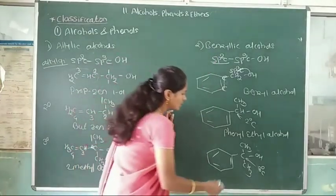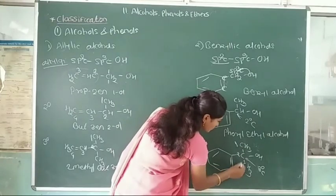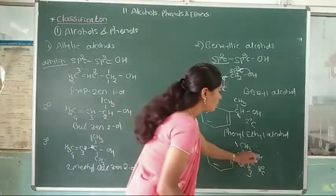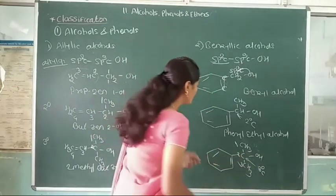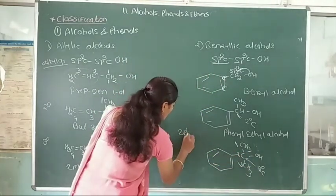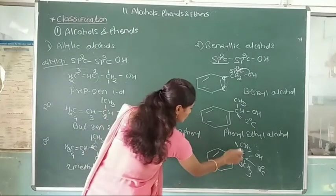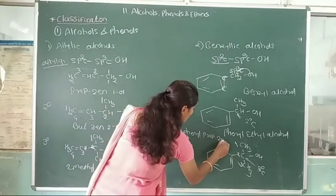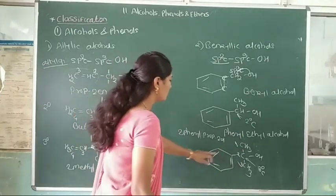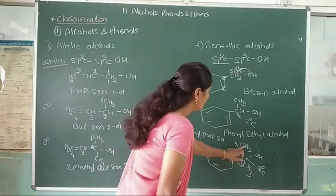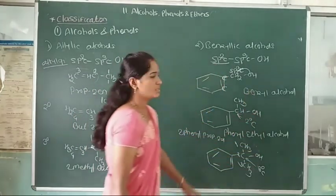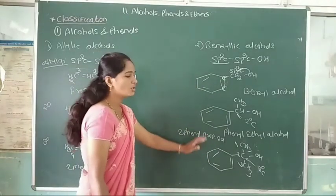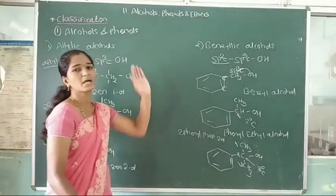Name of the tertiary benzylic compound: 2-phenyl-2-propan-2-ol. These are three examples of primary, secondary, and tertiary benzylic alcohols.